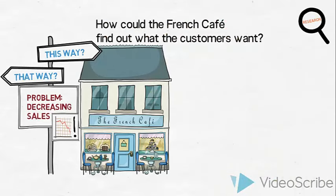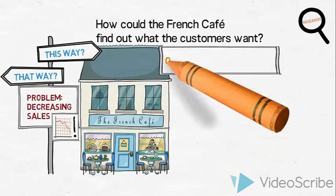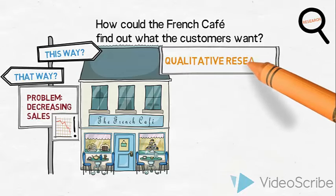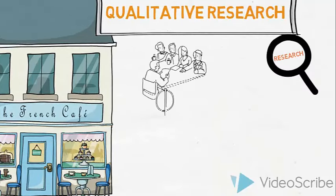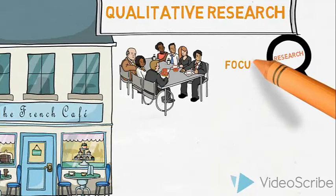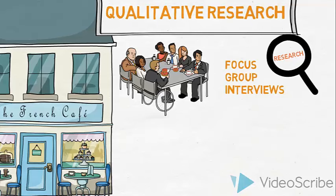So how could the French café find out what the customers want? Let us introduce a few types of qualitative research. They could invite a group of customers in for a focus group interview, a discussion with the customers about their experiences, thoughts and feelings about the French café. This could provide them with important clues of what the customers like and what they don't like.